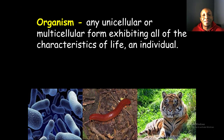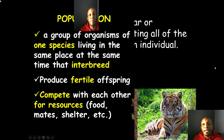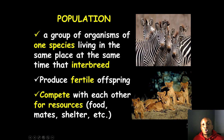An organism is any unicellular or multicellular form exhibiting all the characteristics of life — an individual. For example, this bacteria is an organism, this insect or centipede is an organism, and this tiger is an organism. All three are examples of organisms.